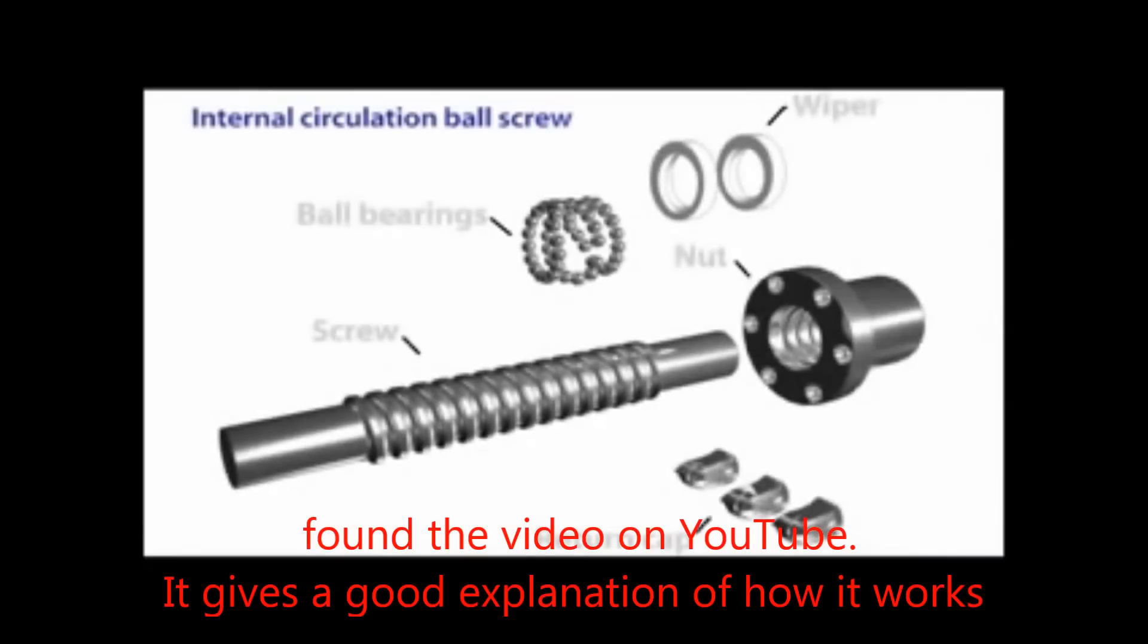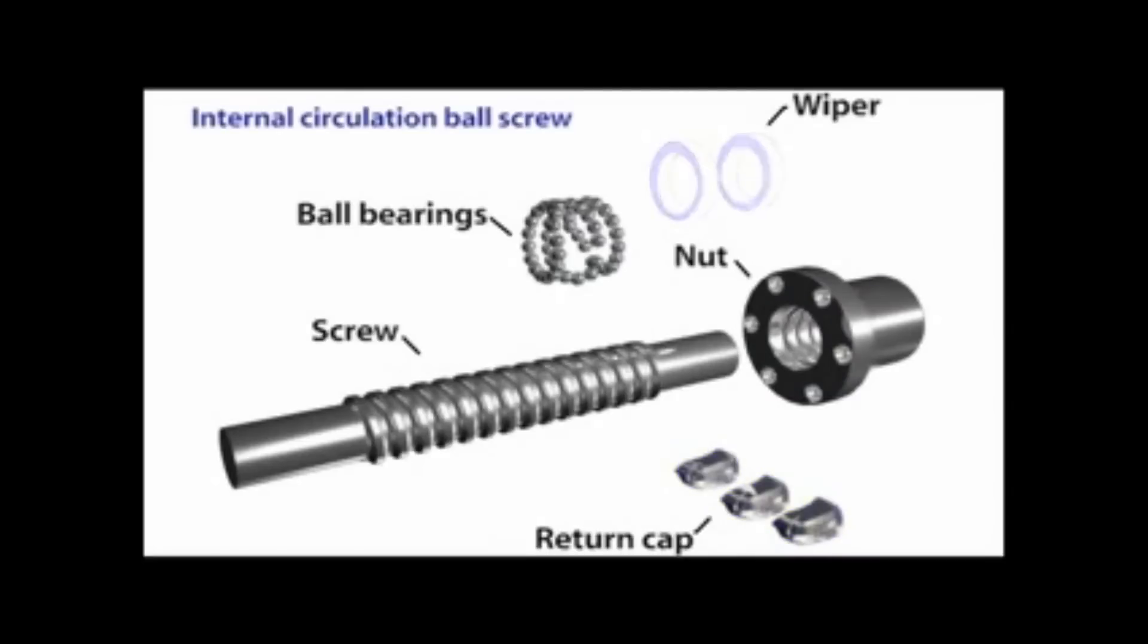Internal circulation ball screws are composed of a screw, nuts, ball bearings, return caps, bars, and wipers.